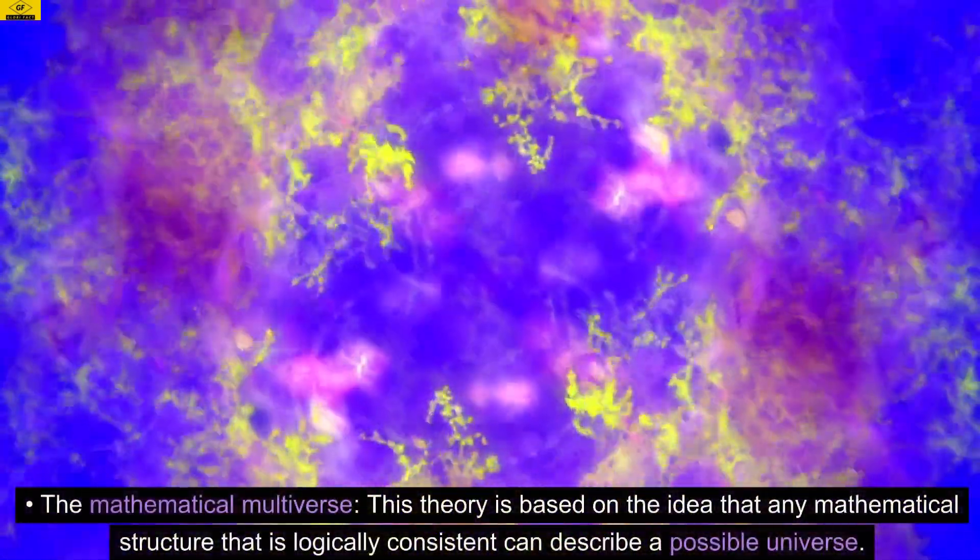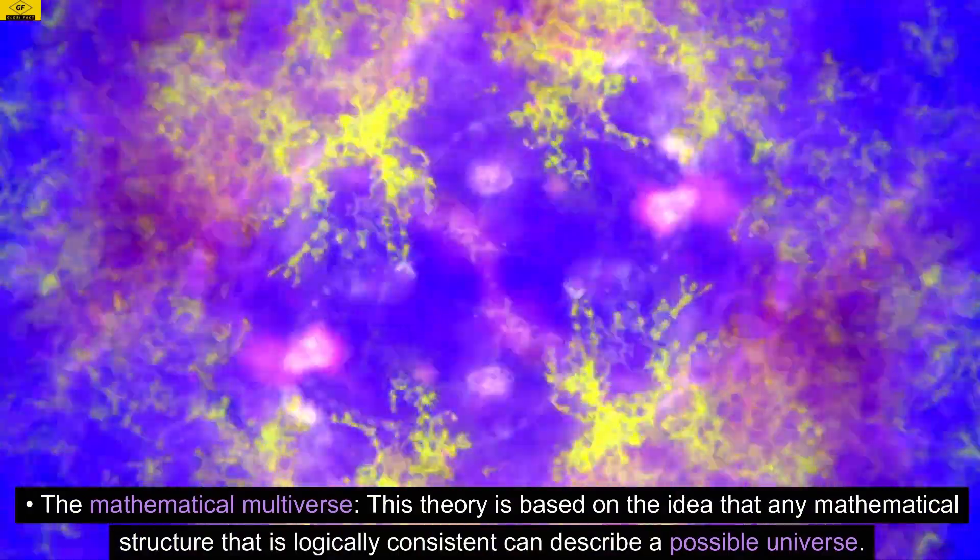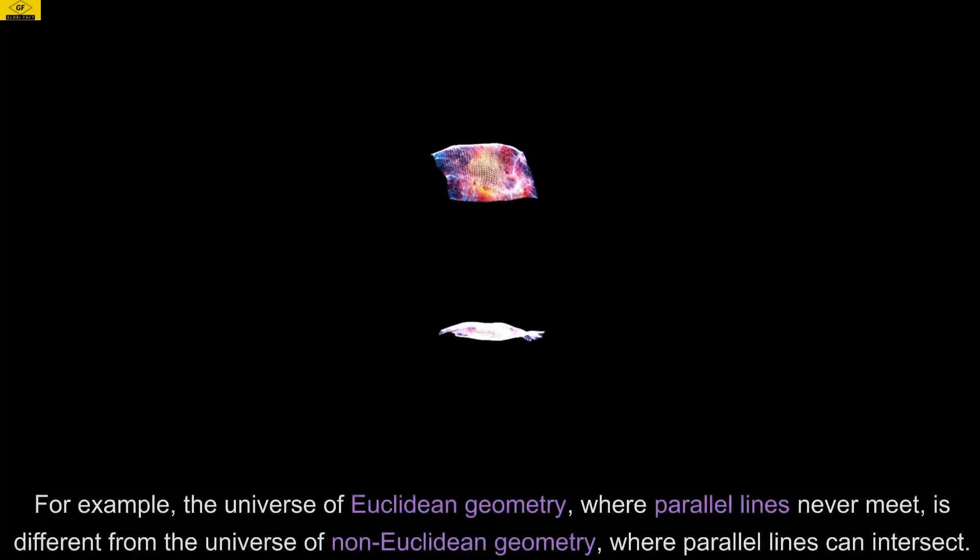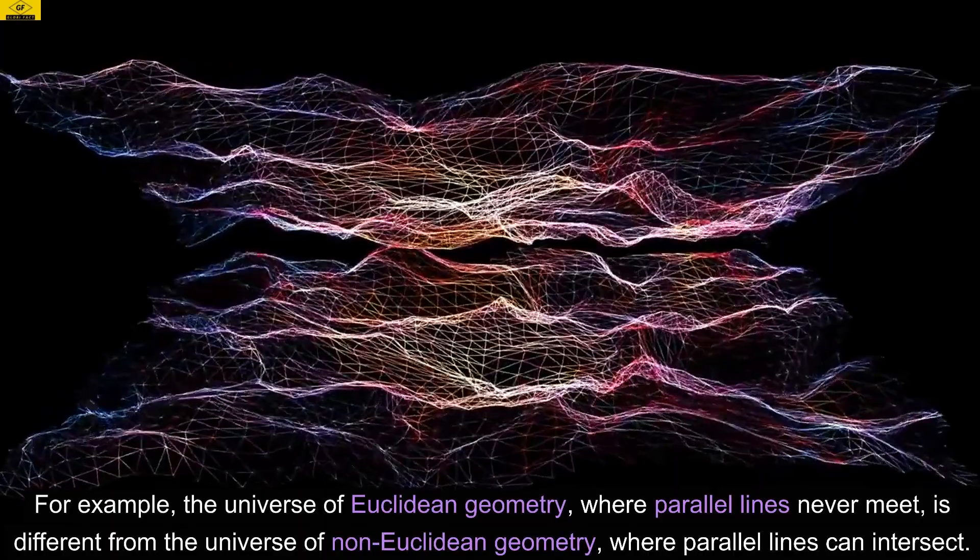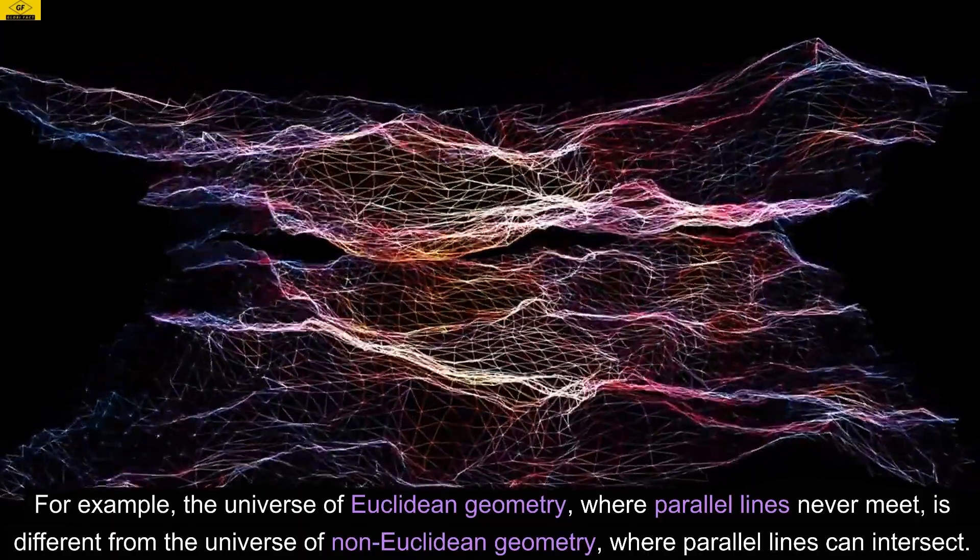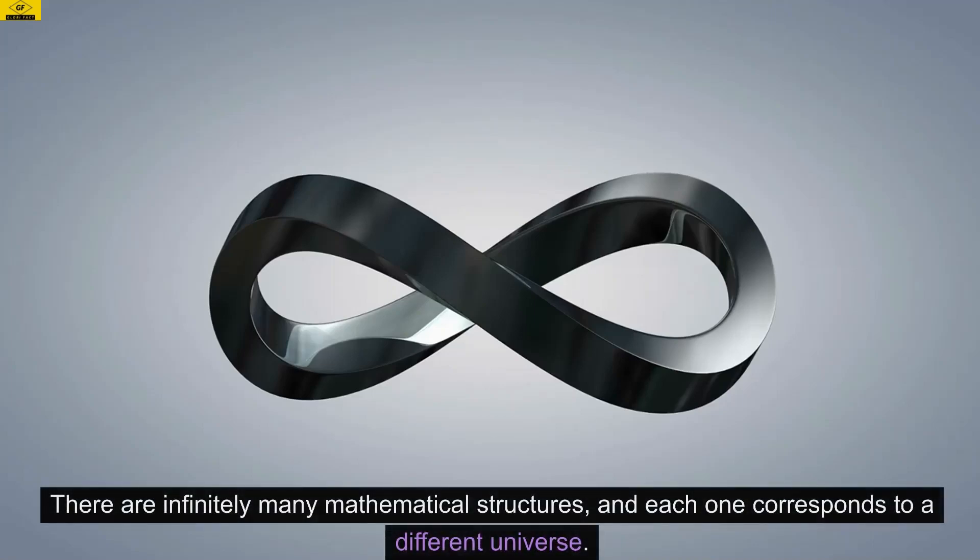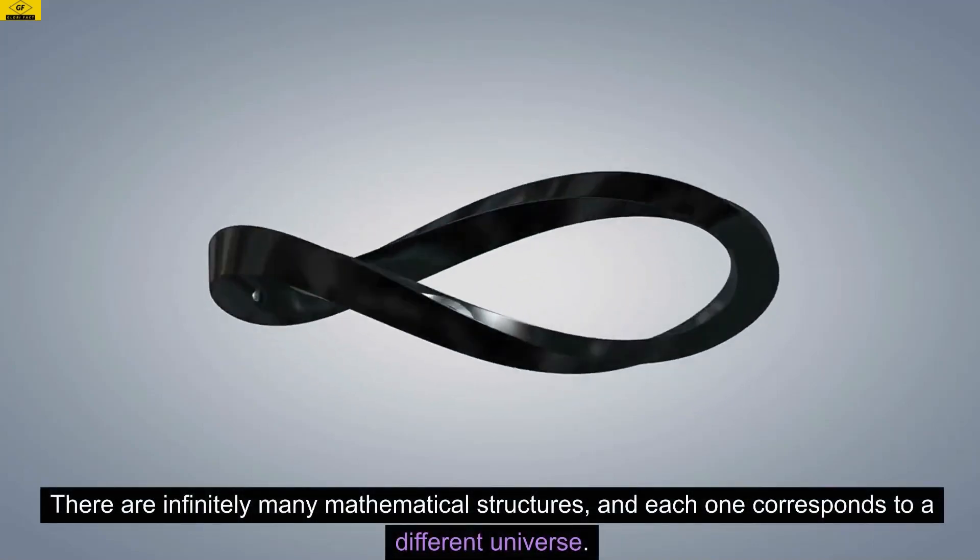The mathematical multiverse. This theory is based on the idea that any mathematical structure that is logically consistent can describe a possible universe. For example, the universe of Euclidean geometry, where parallel lines never meet, is different from the universe of non-Euclidean geometry, where parallel lines can intersect. There are infinitely many mathematical structures, and each one corresponds to a different universe.